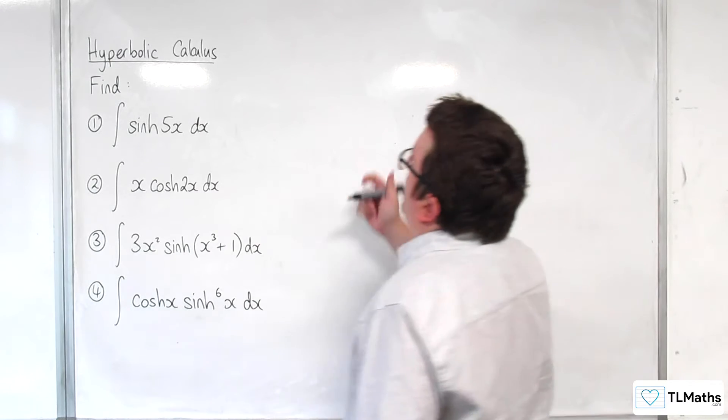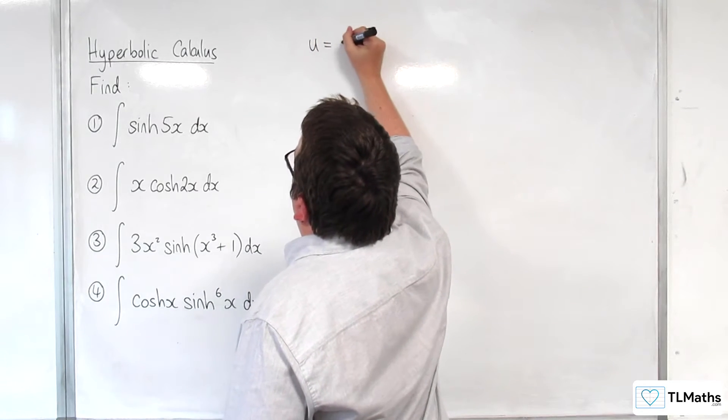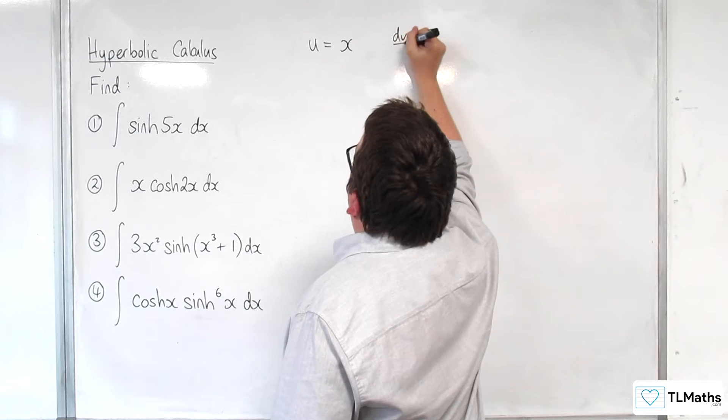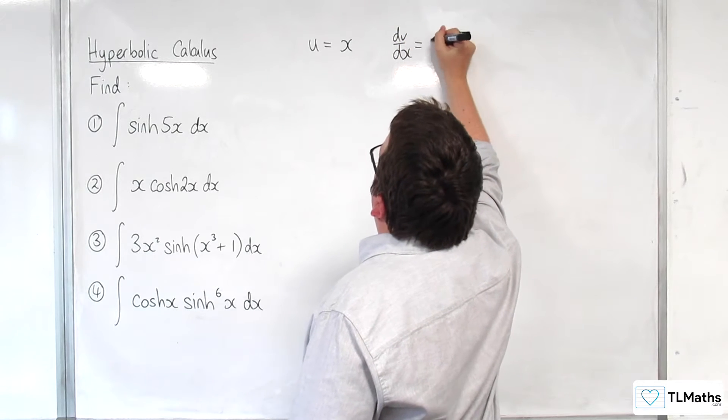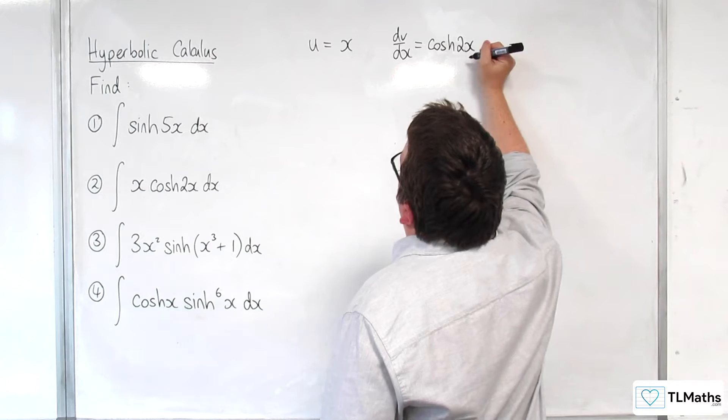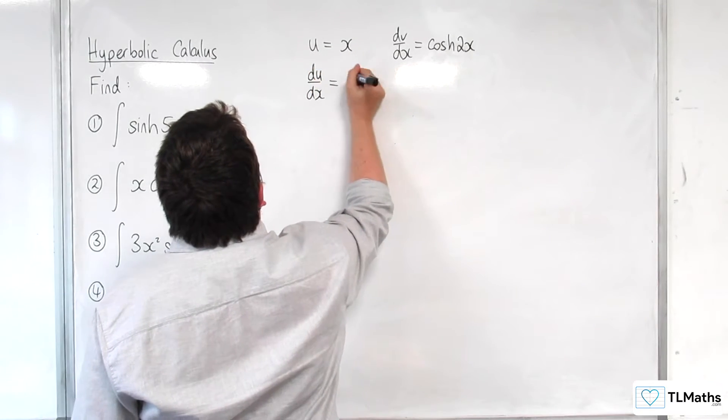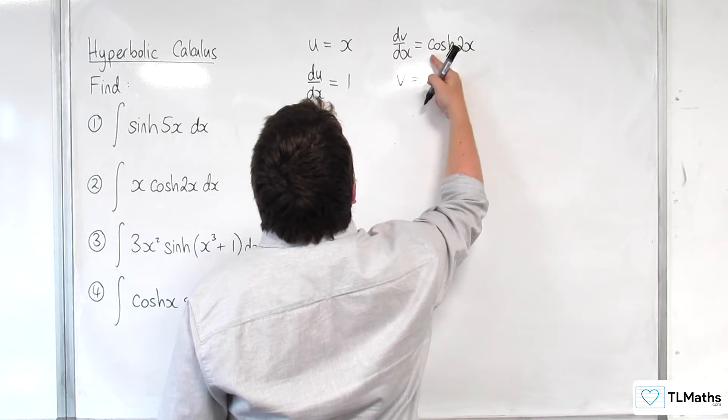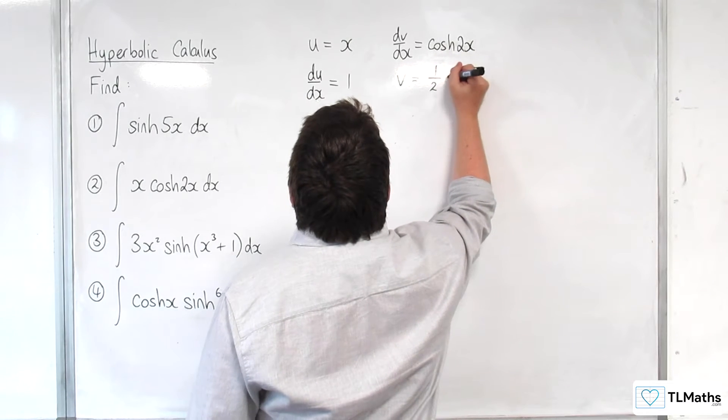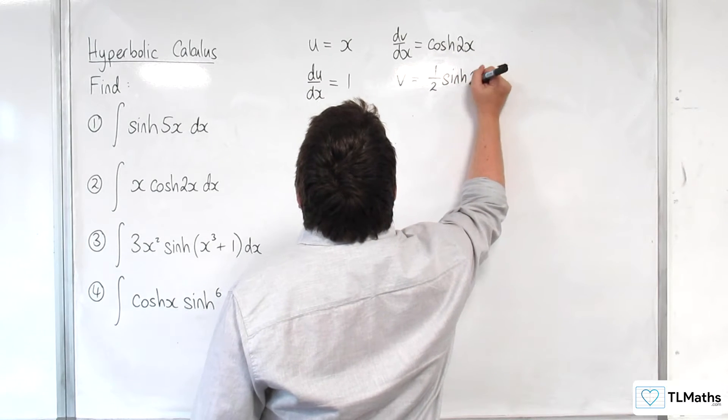So if we set up u to be the x and dv/dx to be cosh of 2x, then du/dx would be 1, and v integrating this would be one-half sinh 2x.